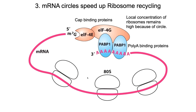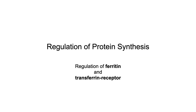Eukaryotic messenger RNAs have a five-prime G cap and a three-prime poly-A tail, and specific proteins bind to each. The proteins bound to the cap and to the poly-A tail interact with each other, forming a large circle. This means ribosomes start at the five-prime end, complete translation, and end right back where they began, greatly increasing the local concentration of ribosomes and allowing them to start over efficiently. Finally, we will look at some examples of the regulation of translation — specifically protein synthesis as it applies to ferritin and the transferrin receptor.